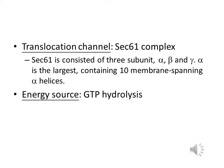The third component needed is a translocation channel. SEC61 is the translocation channel through which the polypeptide is translocated into the endoplasmic reticulum. SEC61 consists of three subunits: alpha, beta, and gamma. The alpha subunit is the largest, containing 10 membrane-spanning alpha helices. The energy source for this entire translocation process is generated by GTP hydrolysis.